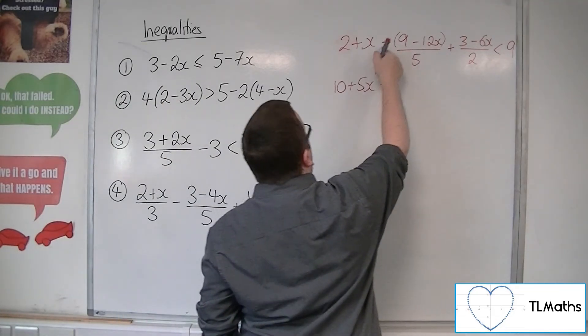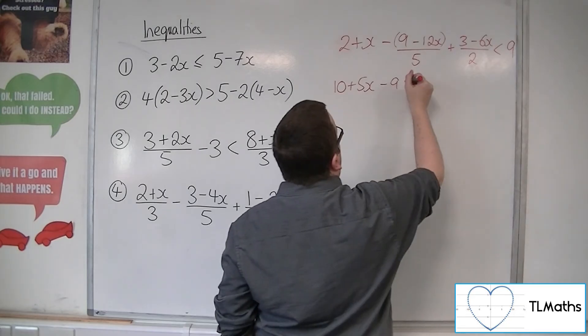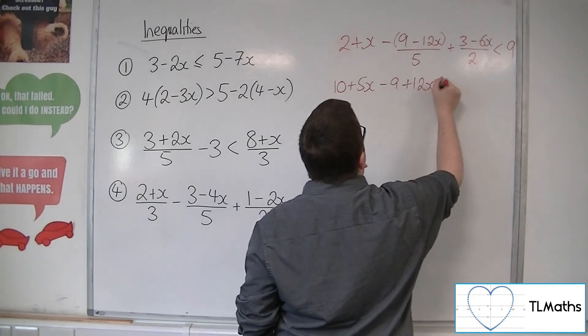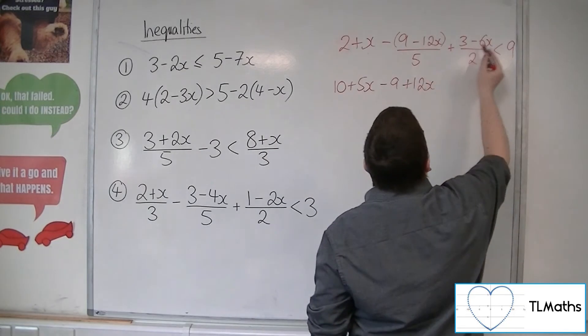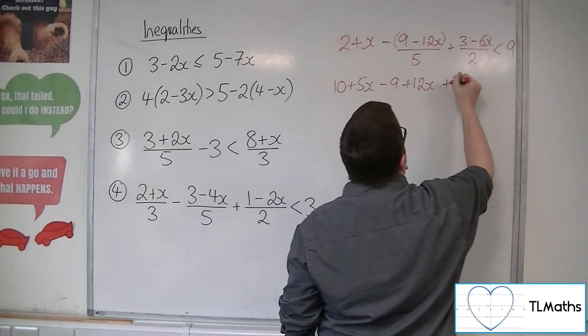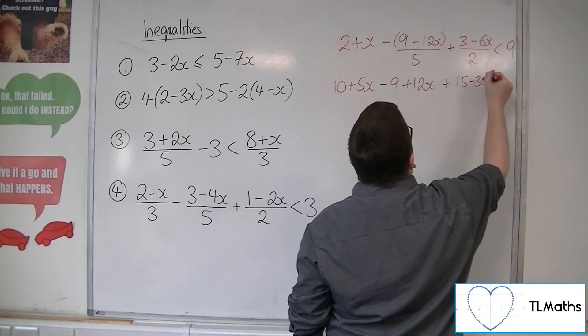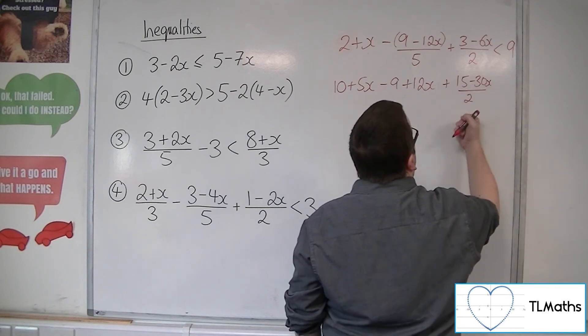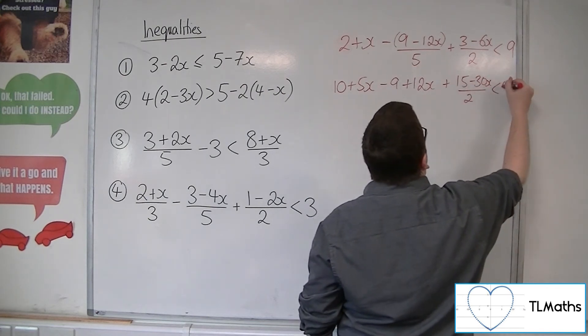The 5 affects the numerator of this fraction, so I get 15 minus 30x over 2. And 5 lots of 9 is 45.